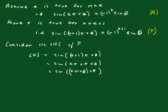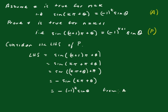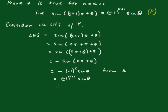Now we take this angle here and add pi. We know this will make this minus the sine of this angle, so it equals minus the sine of k pi plus theta. Which equals, looking back at our assumption statement, we know that the sine of k pi plus theta is minus 1 to the k, sin theta. That's from the assumption, which equals minus 1 to the k plus 1, sin theta, which equals the right hand side.